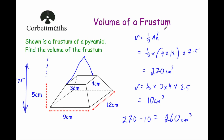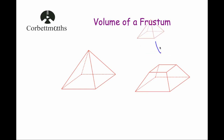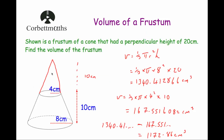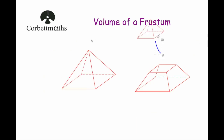So what is a frustrum? A frustrum is what's left after the top of a pyramid or the top of a cone is removed. And to get its volume, what I would often recommend is: find the volume of the whole shape to begin with, then work out the volume of what's been removed, and take them away.